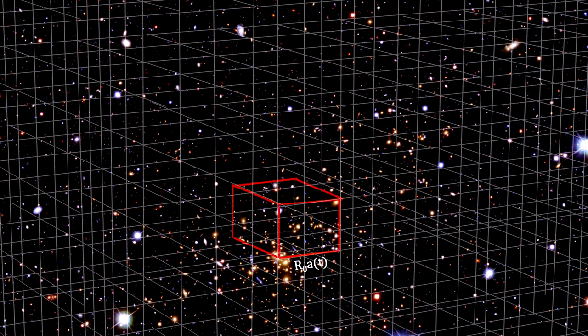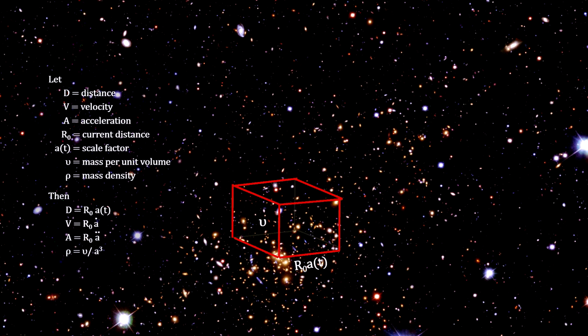Now consider a cube enclosing a volume of space containing some number of galaxies. With our scale factor approach, the amount of matter inside the volume remains the same as the volume increases or decreases.